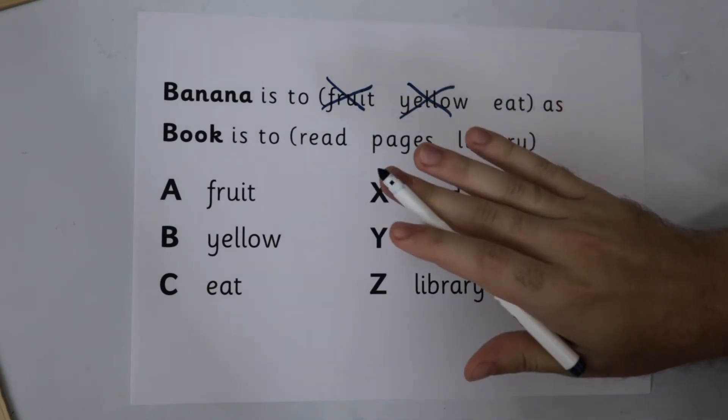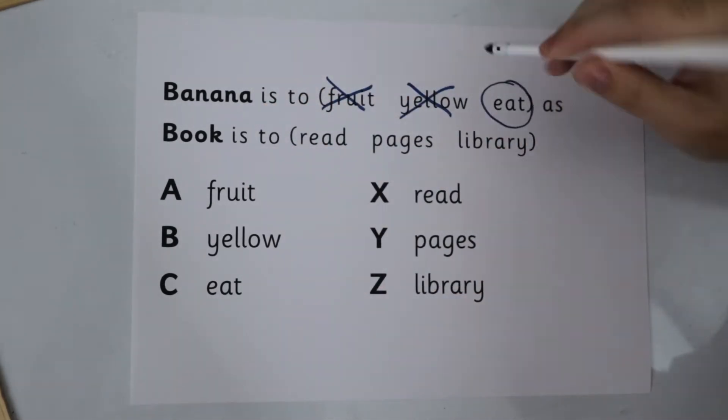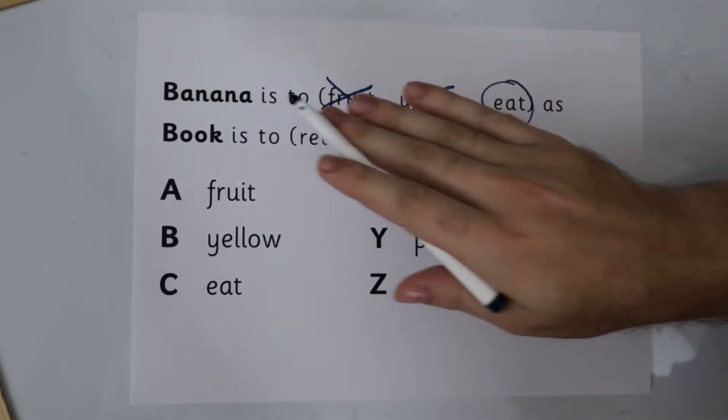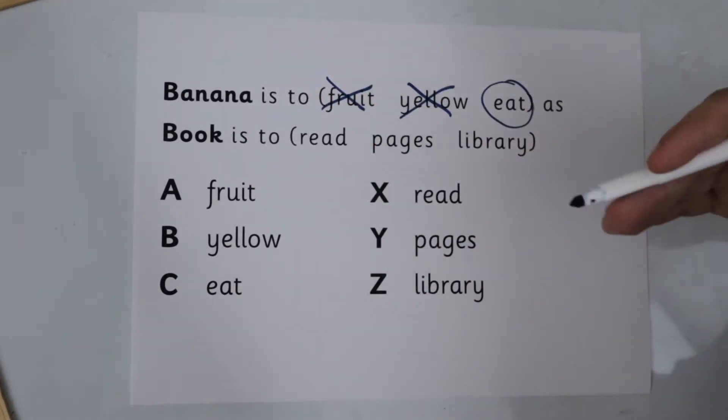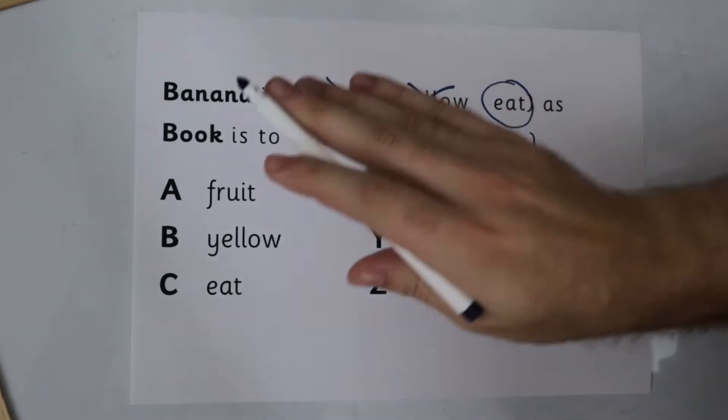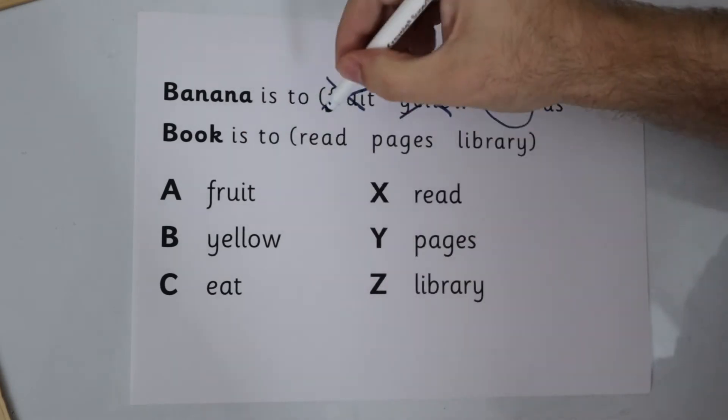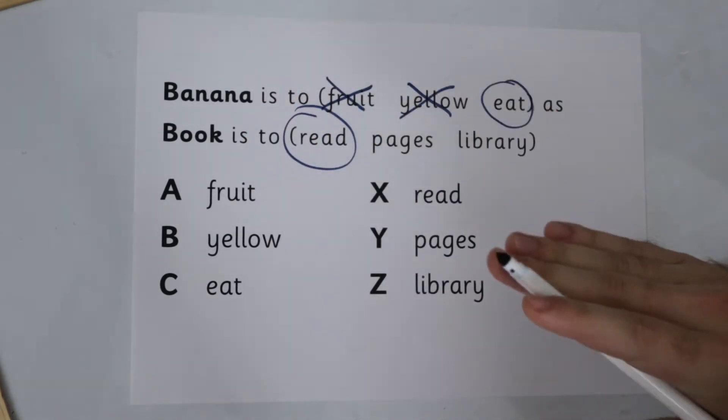So even though we're pretty sure now that banana is to eat is going to be the right option as it's the only one left, we still need to find out which word matches correctly. So banana is to eat, we could say that we eat bananas, as book is to read, well we could say that we read a book. So this looks promising, just going to make sure.